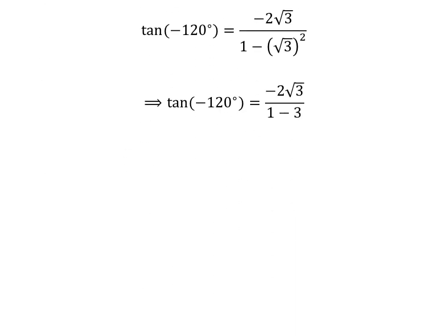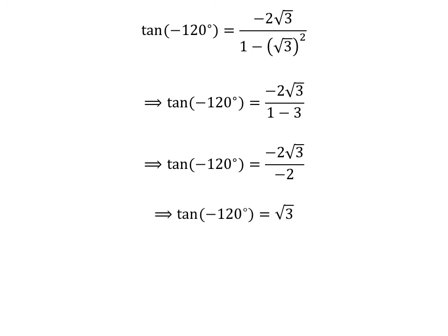As square of square root of 3 is equal to 3, tangent of minus 120 degrees is equal to minus 2 times square root of 3 upon 1 minus 3. As 1 minus 3 is equal to minus 2, tangent of minus 120 degrees is equal to minus 2 times square root of 3 upon minus 2. After cancelling out the common factor minus 2 in the numerator and the denominator, we get tangent of minus 120 degrees is equal to square root of 3.